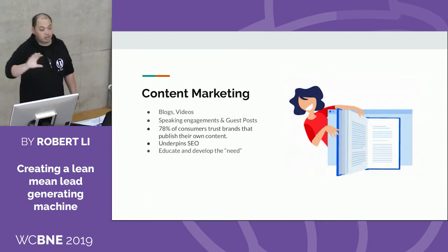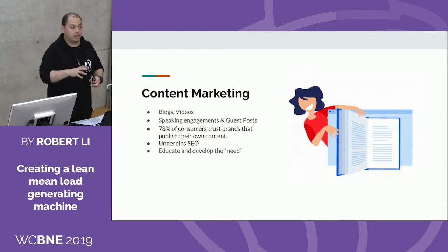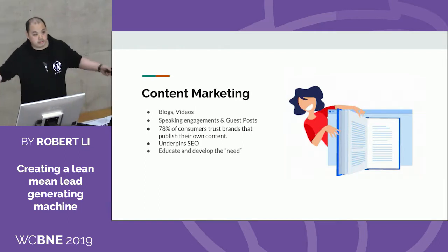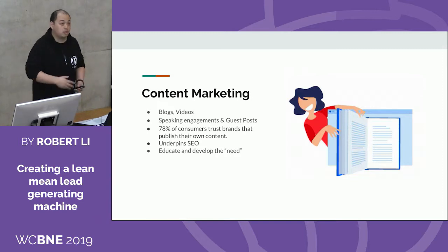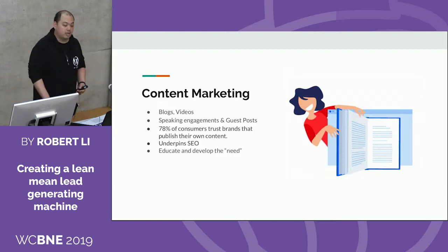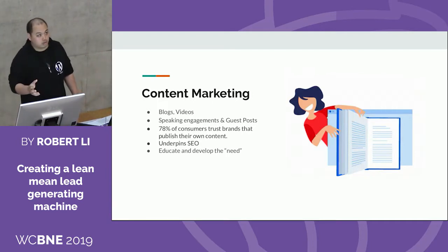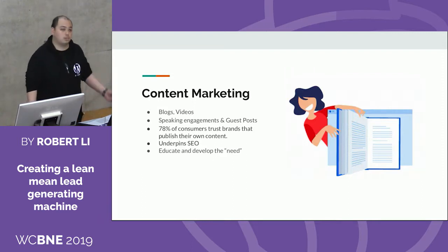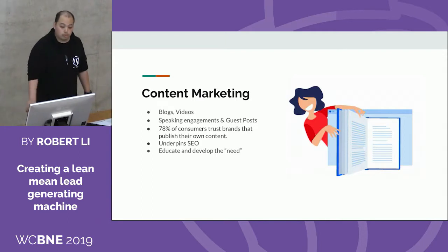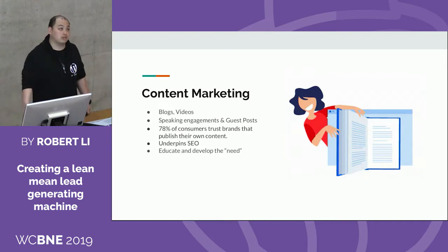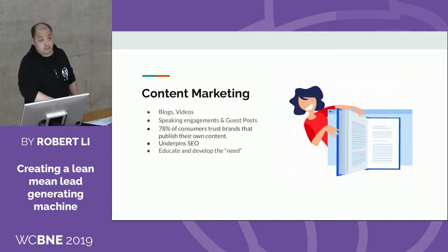Next I want to go into is content marketing — blogs and videos. A lot of people think they just need to write as many articles as they can. But after reviewing Google's search policies around SEO, it turns out it's not necessarily about content quantity — it's about general domain authority. When we talk about content marketing, we should not only be talking about blogs and videos, but also guest posts, podcast spots, speaking engagements, even creating memes. 78% of consumers trust brands that publish their own content. So you want to be really varied in the way you develop that interest.